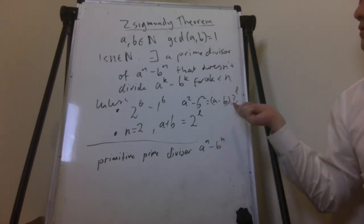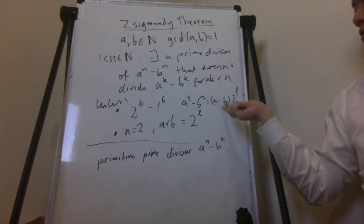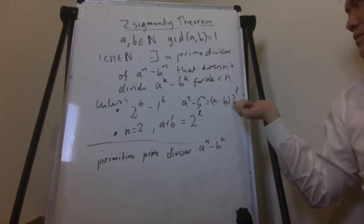So any prime divisor of a minus b obviously already divides a minus b, so it can't be primitive. And so the only other prime divisors would be 2.